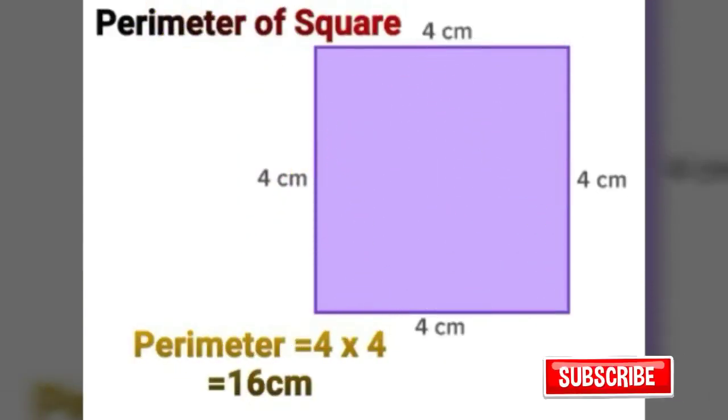For example, a square has 4 centimeter side, then perimeter equal to 4 into 4, 16 centimeter.